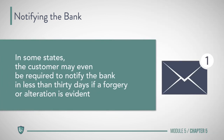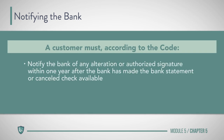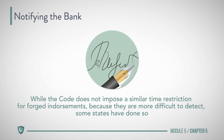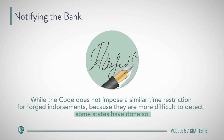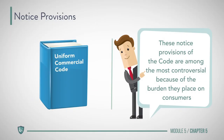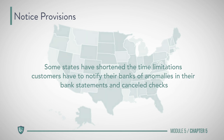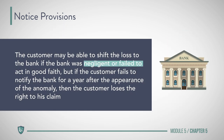In some states, the customer may be required to notify the bank in less than 30 days if a forgery or alteration is evident. According to the Code, a customer must notify the bank of any alteration or unauthorized signature within one year after the bank has made the bank statement or cancelled check available. After one year, the customer cannot make an unauthorized signature or alteration claim. While the Code does not impose a similar time restriction for forged endorsements because they are more difficult to detect, some states have done so. These notice provisions are among the most controversial because of the burden they place on consumers, and some states have shortened the time limitations. The customer may shift the loss to the bank if the bank was negligent or failed to act in good faith, but if the customer fails to notify the bank for a year after the appearance of the anomaly, the customer loses the right to the claim.